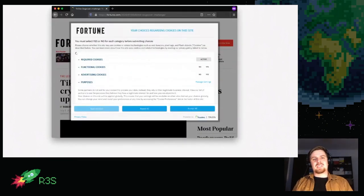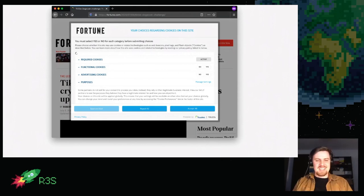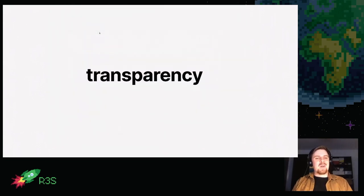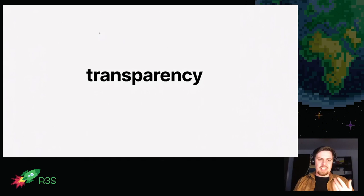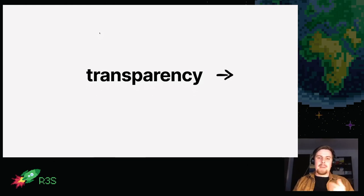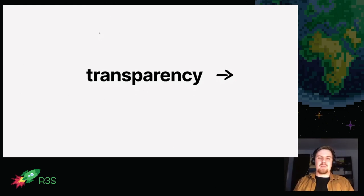First there's consent — the idea that you get a say about what happens with your data. We'll skip further discussion there as the state of it is depressing enough. Rather, let's talk about transparency: the notion that organizations processing your personal information provide truthful information about what they collect and how they process it. Backwards transparency has a more sexy-sounding name.